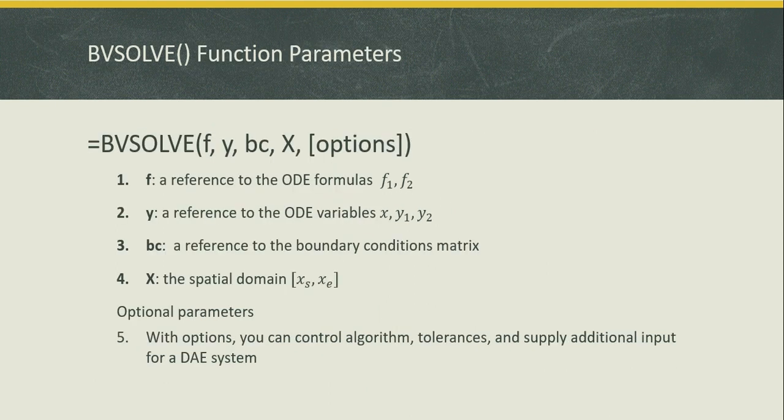Let me begin by introducing the function BVSOLVE. BVSOLVE requires four parameters. The first parameter is a reference to the ODE formulas on the right-hand side. The second parameter is a reference to the ODE variables, including the independent variable x and the differential variables. The third parameter is a reference to the boundary conditions matrix. The fourth parameter is a definition for your spatial domain which defines your starting point and endpoint locations. BVSOLVE also takes additional optional parameters which enable you to control the algorithm, tolerances, and supply additional input if you have a DAE system which includes algebraic constraints.